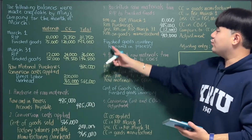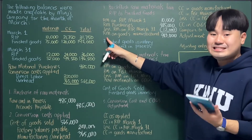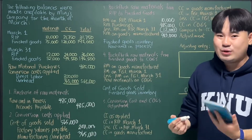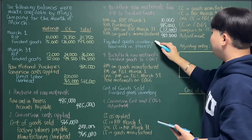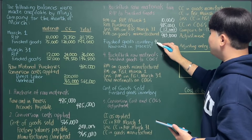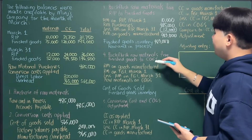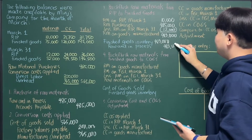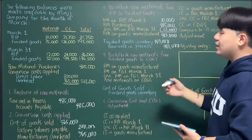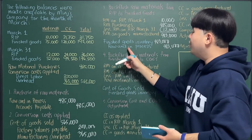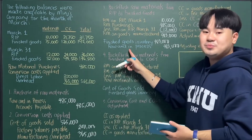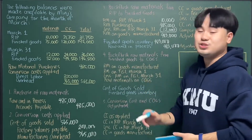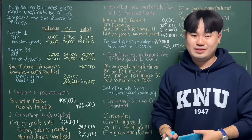That $483,000 is the raw materials component inside the goods you have already completed. So we debit finished goods inventory $483,000 and credit raw and in process $483,000. Basically, you're transferring the raw material amount from your raw and in process account to your goods completed — your finished goods inventory.